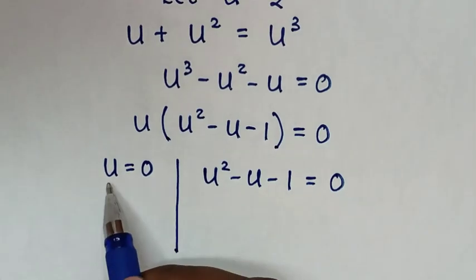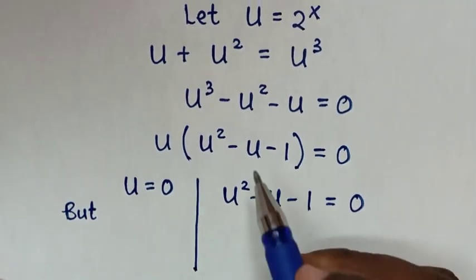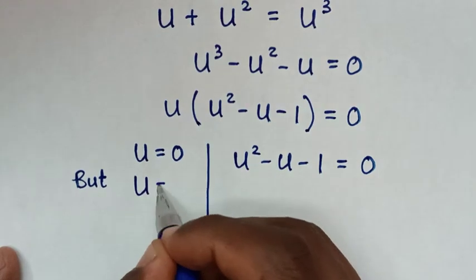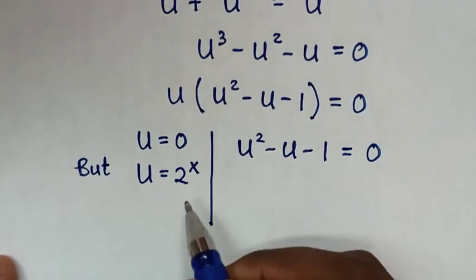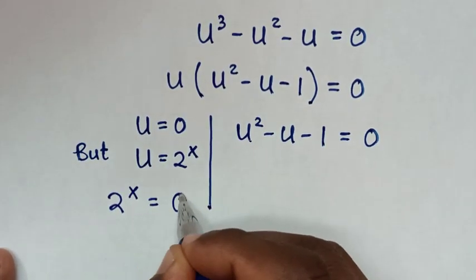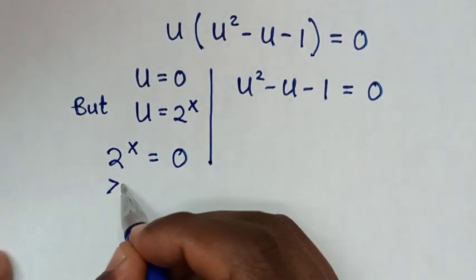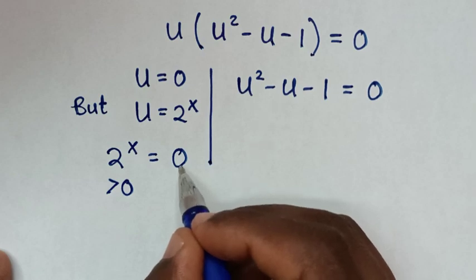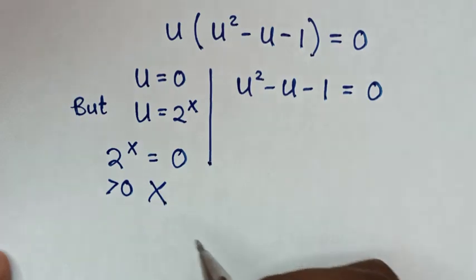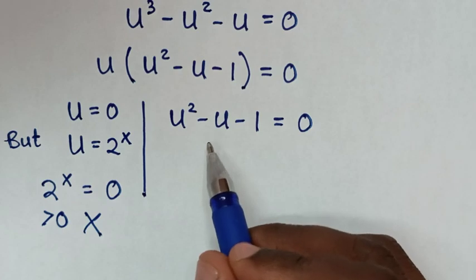Since we let u equal to 2^x, comparing u equals 0 gives 2^x equals 0. But 2 to the power of any number is always greater than 0, so this solution is not possible and we reject it.